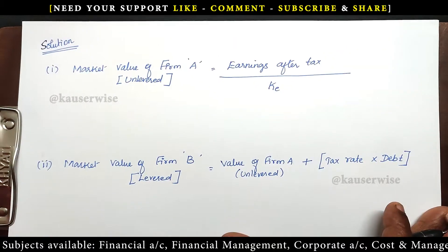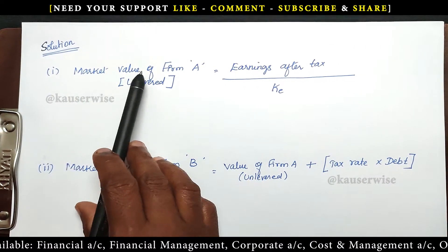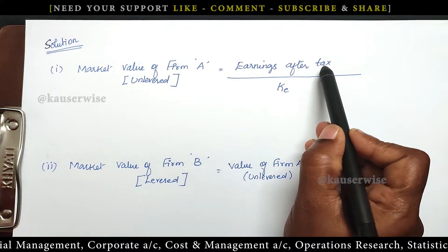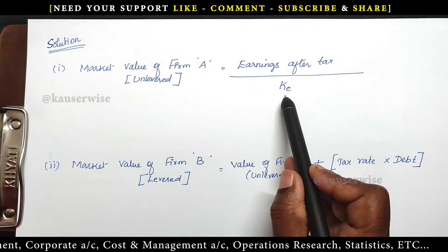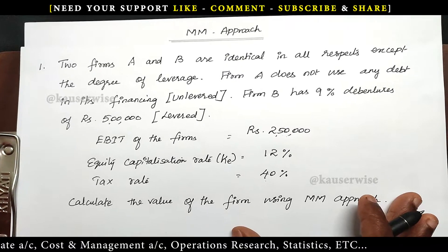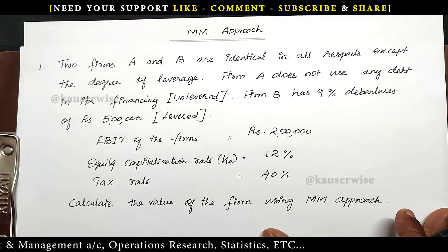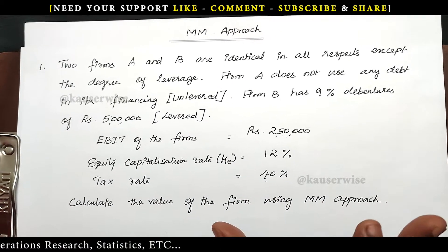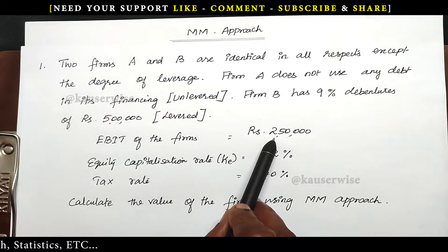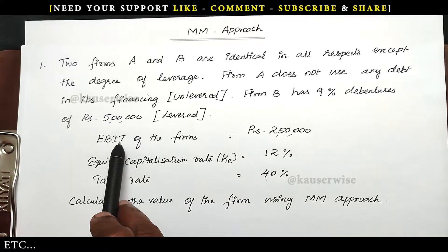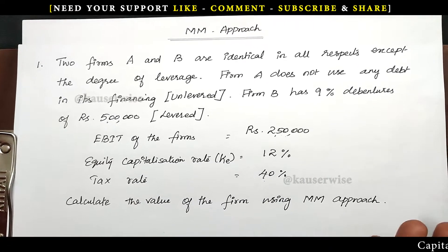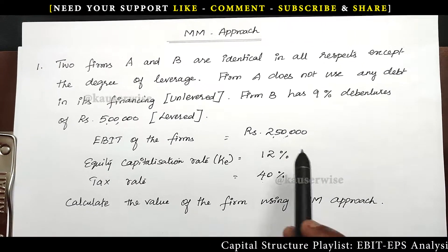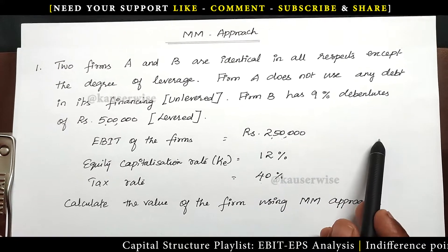Now let us see the calculation. First we are going to find out the market value of the unlevered firm, which means only equity. The formula is earnings available after tax divided by cost of equity. We need to first find out earnings after tax because KE is given as 12%. EBIT is 2,50,000. Tax is 40% on 2,50,000, which gives 1 lakh. So subtract tax from earnings to get earnings after tax.